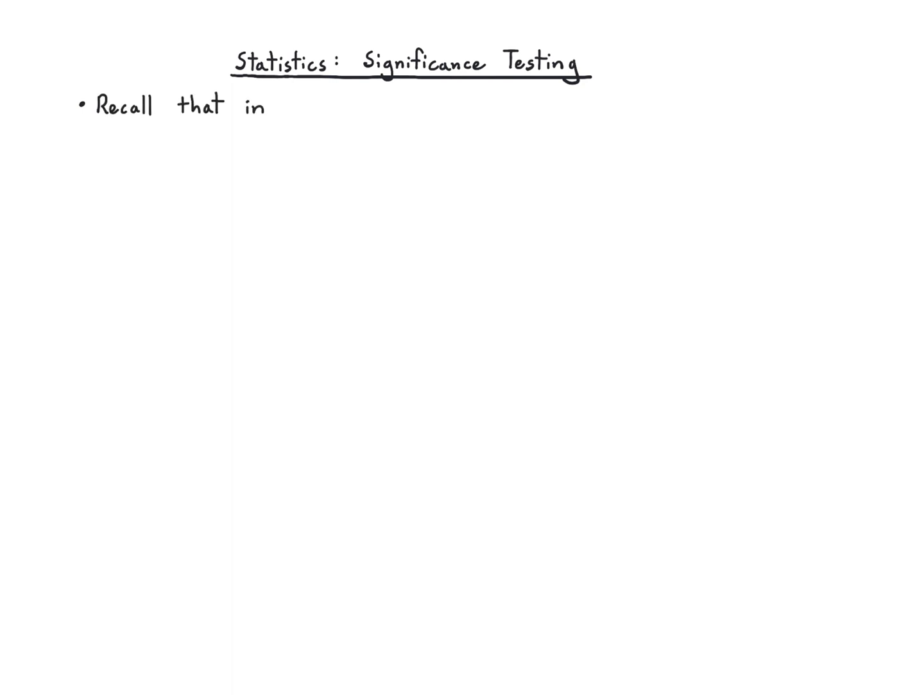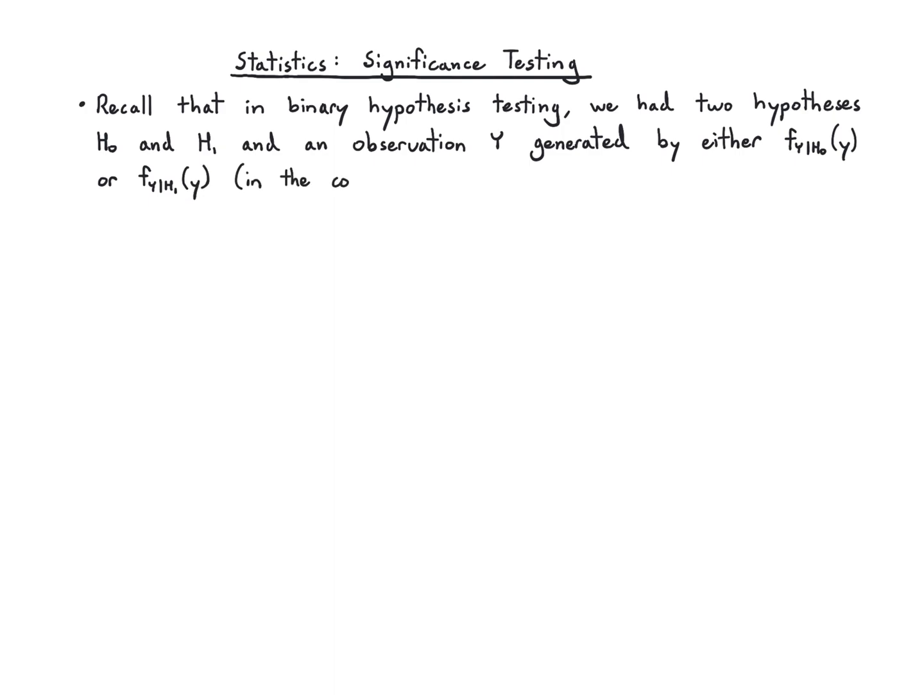Remember, in binary hypothesis testing, we had two hypotheses H0 and H1, and from that we got an observation Y generated either by the conditional pdf under H0 or the conditional pdf under H1 in the continuous case.